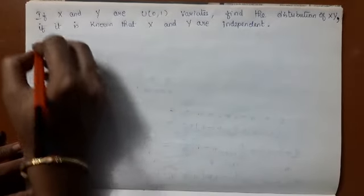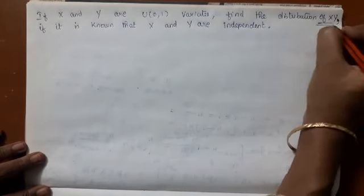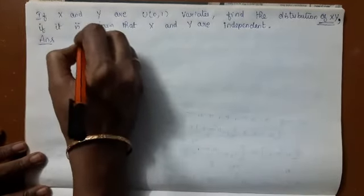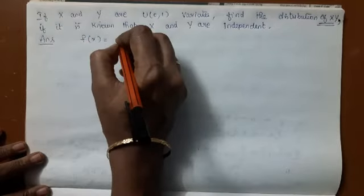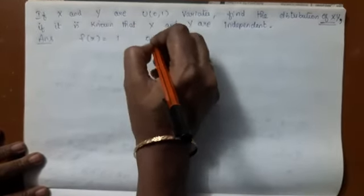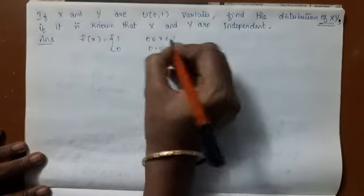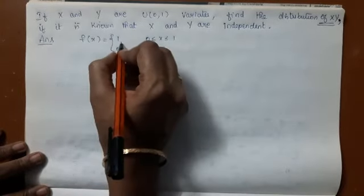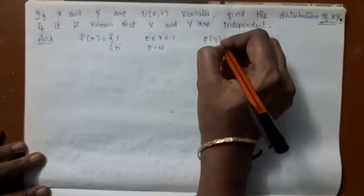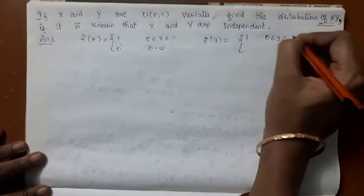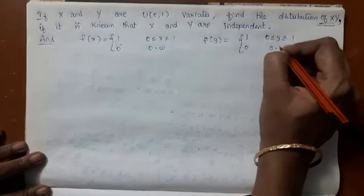Let us consider this problem of finding the distribution of xy, when x and y are independent uniform variates. It is given that f(x) = 1 in the interval 0 ≤ x ≤ 1, and 0 otherwise — it is a uniform variate. Similarly, f(y) = 1 in the interval 0 ≤ y ≤ 1, and 0 otherwise.